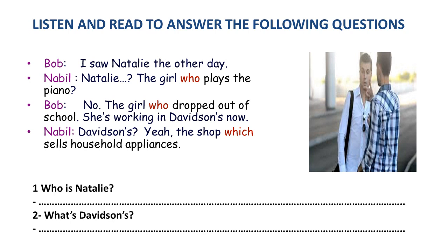Look at the picture. What do you think the two students are talking about? Now listen and read the dialogue below to answer the following questions. Number one: Who is Nathalie? Number two: What is Davidson's? Are the questions clear? Now listen to the dialogue.